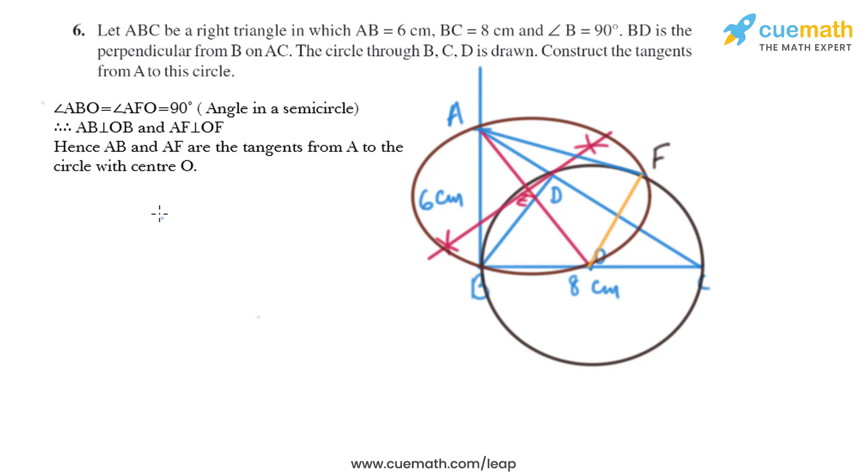Now let's do the justification of this construction. Angle ABO equals angle AFO equals 90 degrees. So we have got AB perpendicular to OB and AF perpendicular to OF. So we have got AB and AF as the tangents from A to the circle with center O. AB and AF are the required tangents.